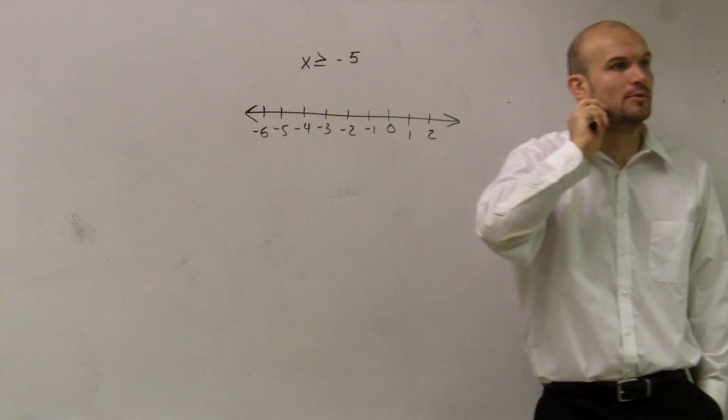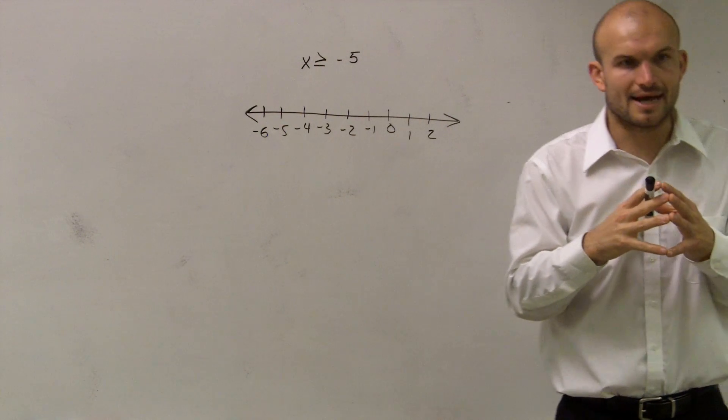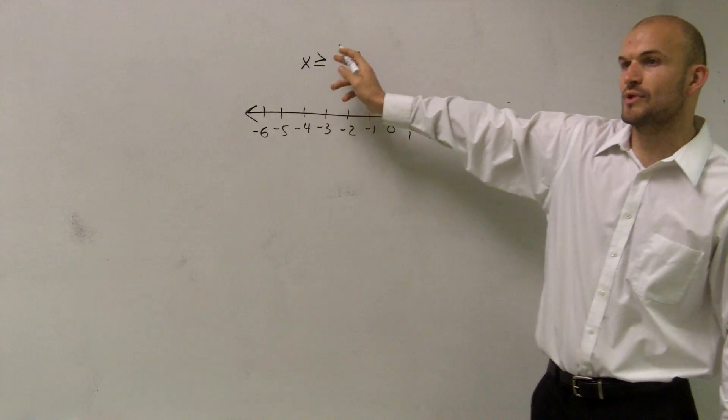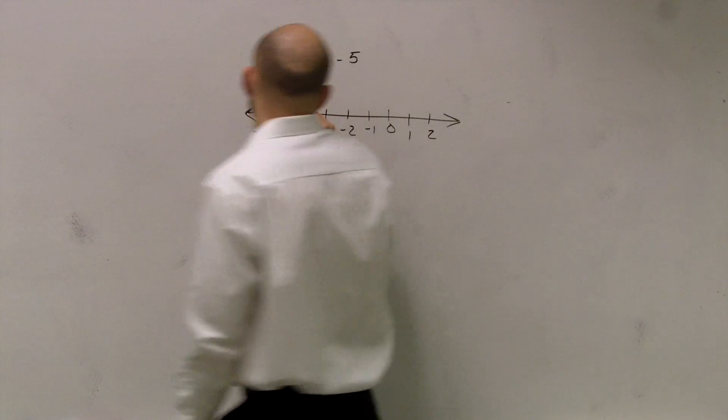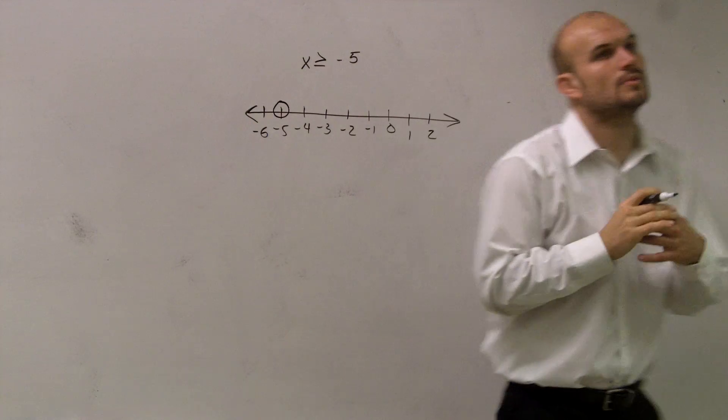So when I want to graph this, what I'm going to do is I need to pick at least the first value that we're going to work with. And since it says x is greater than or equal to negative 5, I'm going to go ahead and pick negative 5. And I'm going to make a nice big circle. Alright?